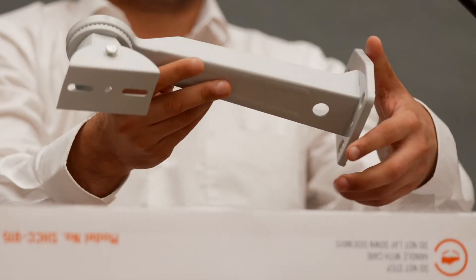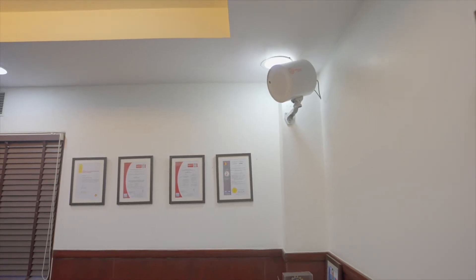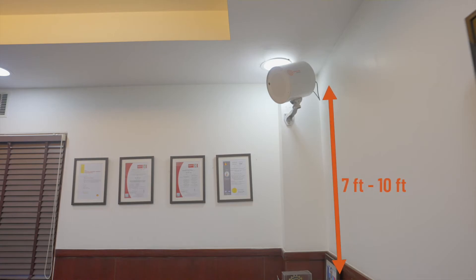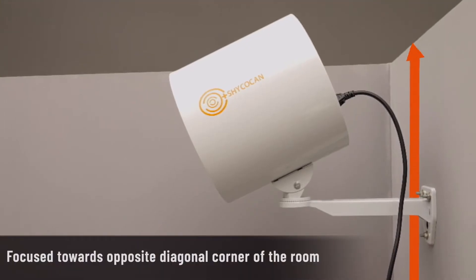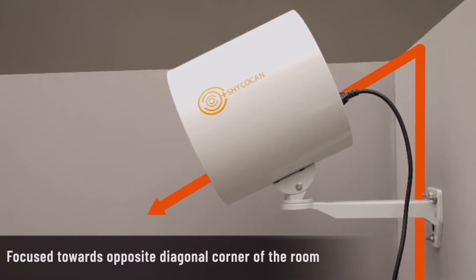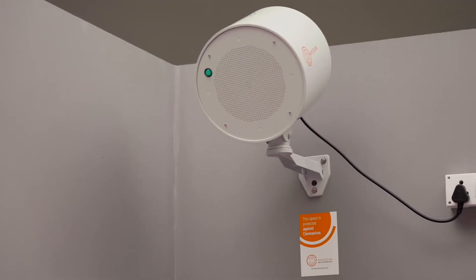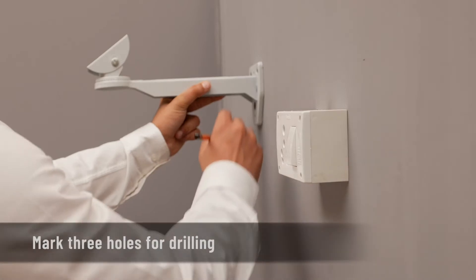The device should be focused at an angle pointing towards the opposite diagonal corner of the room for maximum coverage. Use a pencil to mark three holes on the wall where the bracket screws are to be drilled in.